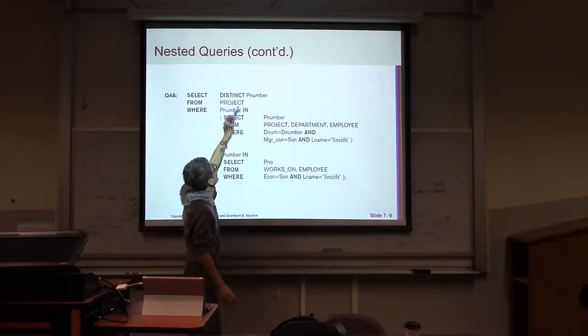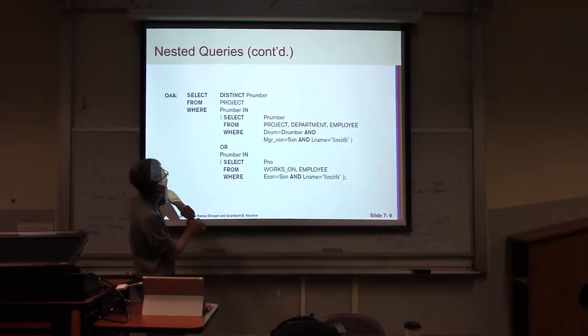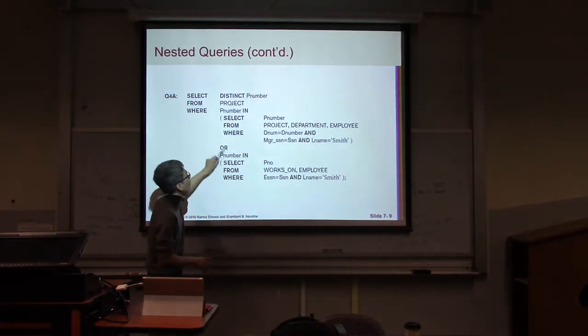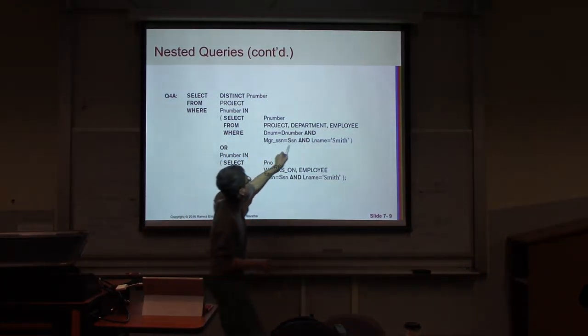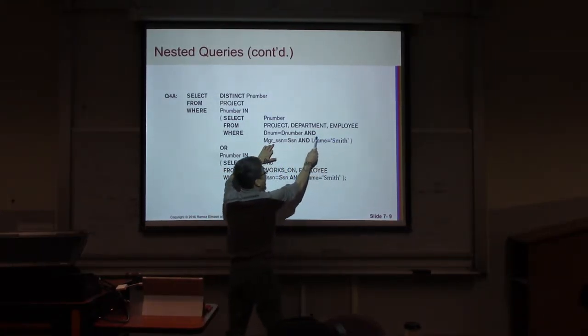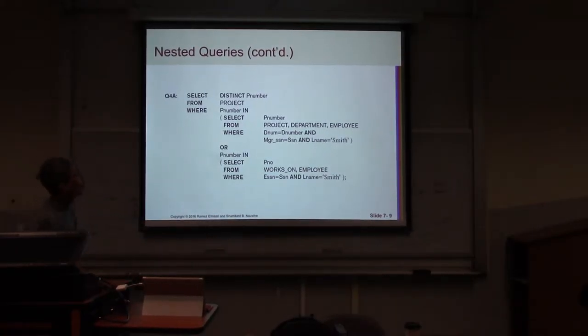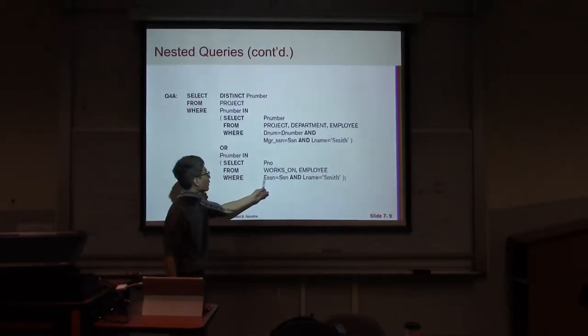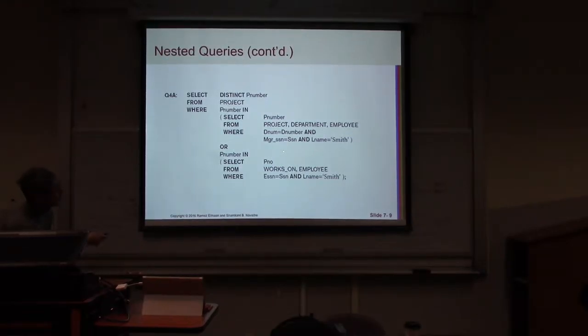For example, in this case, I try to retrieve the P number from the project. That P number satisfies this condition, at least existing here. What does it mean? It's the whose manager's last name is Smith, or whose employee's last name is Smith. At least, I'd like to retrieve the project whose project manager's last name is Smith, and whose employee's last name is Smith. So this P number will be written. At that time, you can use such a nested query.